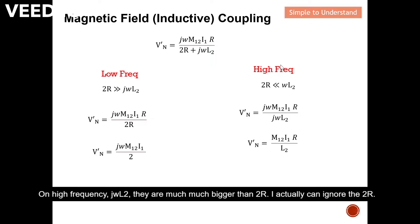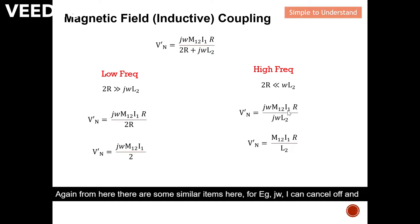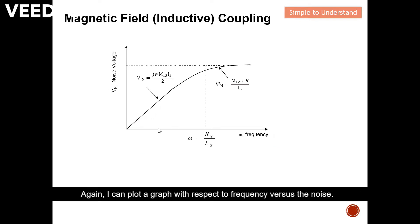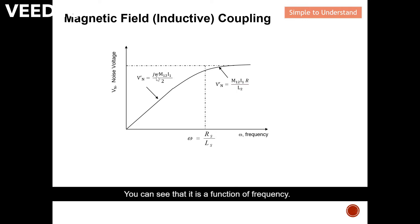At high frequency, j-omega-L2 is much much larger than 2R, so we can ignore the 2R term. This gives us a simplified equation, and after canceling the j-omega terms that appear in both numerator and denominator, we arrive at the noise coupled from conductor one to conductor two at high frequency.